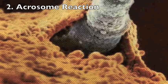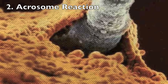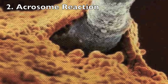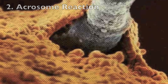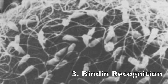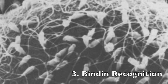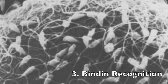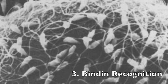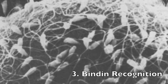Once the sperm has dissolved its way inside of the egg through the outer membrane, binding recognition begins. The acrosomal proteins mediate the recognition between sperm and egg, and these proteins are named binding. Similar to the chemotaxis molecules, these are also species-specific glycoproteins.